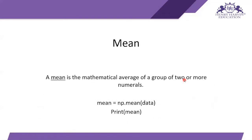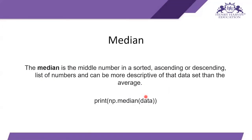Now let's look at some operations we are going to perform in the coding session. Mean is the mathematical average of a group of two or more numbers. To calculate the mean of a dataset, we write: mean = np.mean(data), then print it, and it gives us the mean of the data.